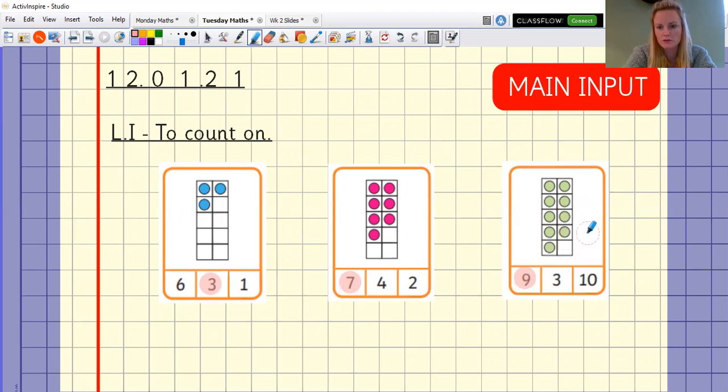Another way you could work it out is, you know, that's a tens frame minus one from 10 is nine. There's lots of different ways you can work them out. Okie dokie. Let's move to the next question.